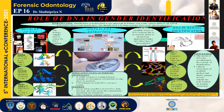The first picture shows the sources of DNA. There are an innumerable number of biological materials that can be used as a source for DNA, which includes hair, tooth, blood, urine, bone, and so on.